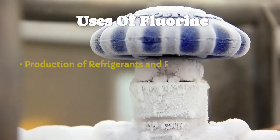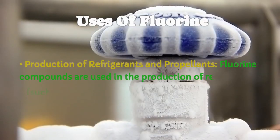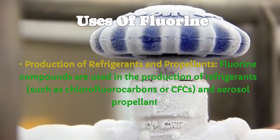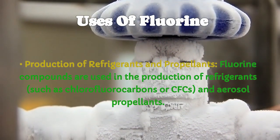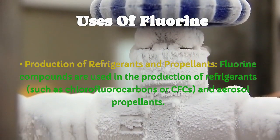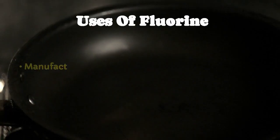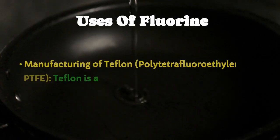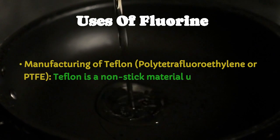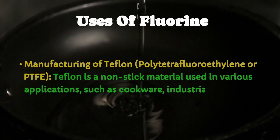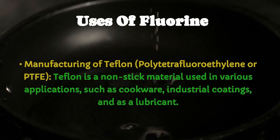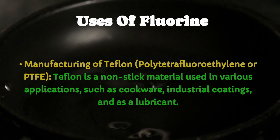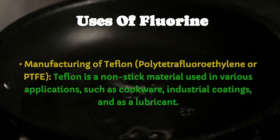Production of Refrigerants and Propellants: fluorine compounds are used in the production of refrigerants, such as chlorofluorocarbons (CFCs), and aerosol propellants. Manufacturing of Teflon: polytetrafluoroethylene (PTFE), or Teflon, is a non-stick material used in various applications such as cookware, industrial coatings, and as a lubricant.